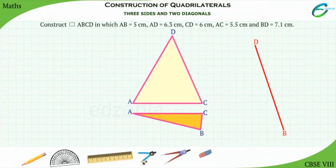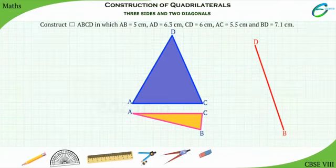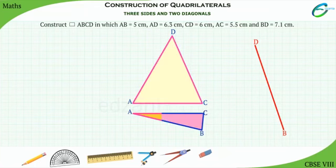First of all, considering the diagonal AC, we will draw the triangle ADC and then construct ABC.